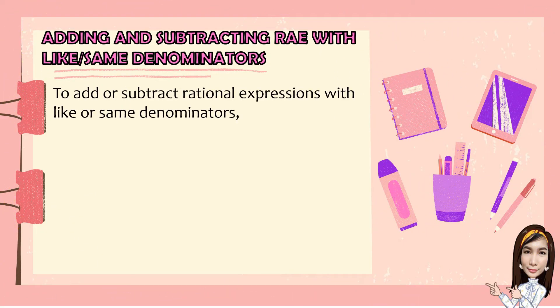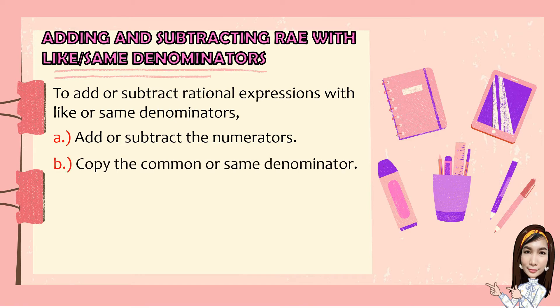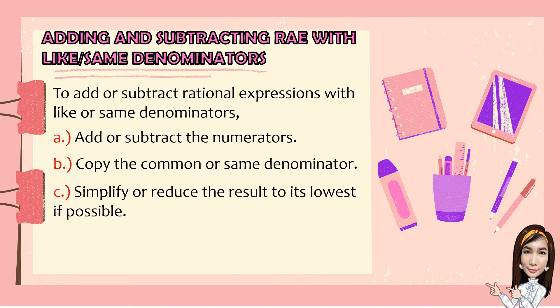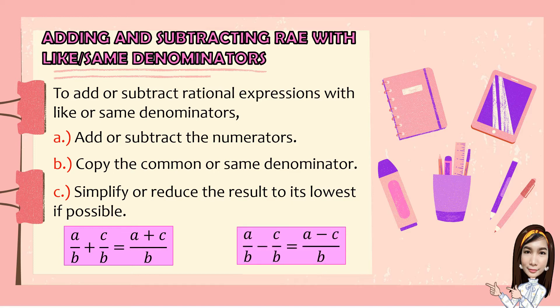To add or subtract rational expressions with like or same denominators: first, add or subtract the numerators; second, copy the common or same denominator; third, simplify or reduce the result to its lowest term if possible. Given A over B plus C over B, that is equal to A plus C over B. And A over B minus C over B is equal to A minus C over B.